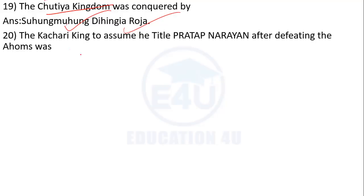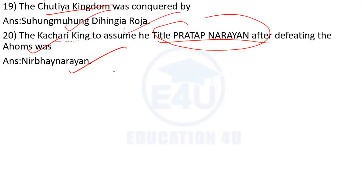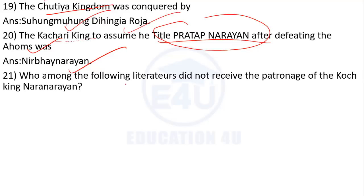Who defeated the Sutiya kingdom — which Ahom king Suhu Nuhu Dhingya conquered the Sutiya people? The Kashari king — after defeating the Ahoms, who among the Kashari kings took the title of Pratap Narayan? The answer is Pratap Narayan; the Kashari king Nirbhay Narayan was given this title.